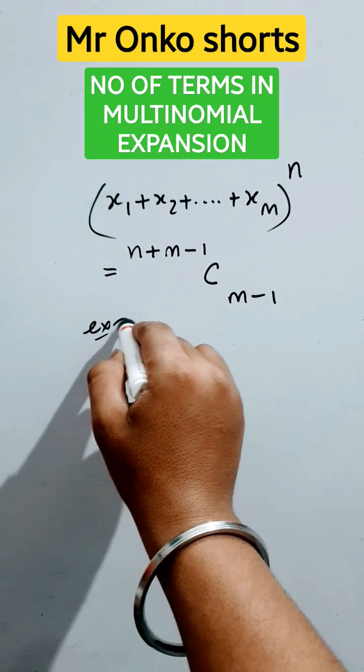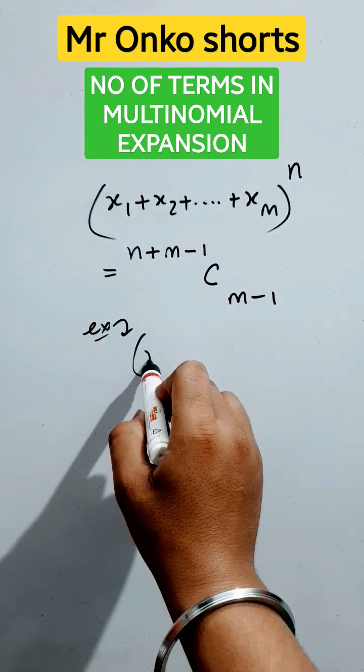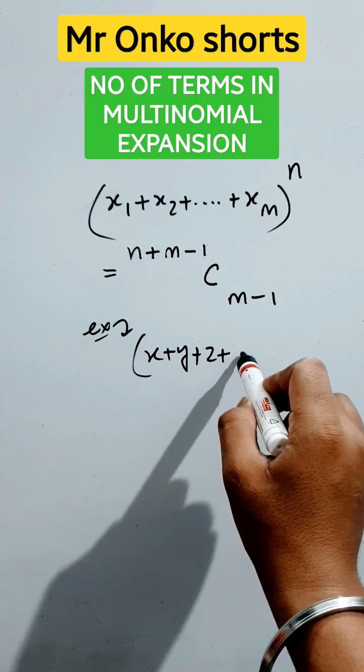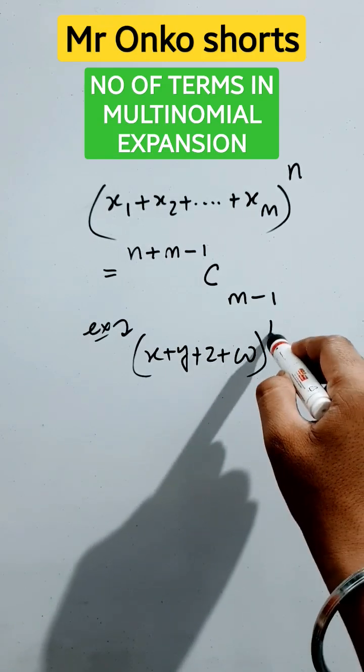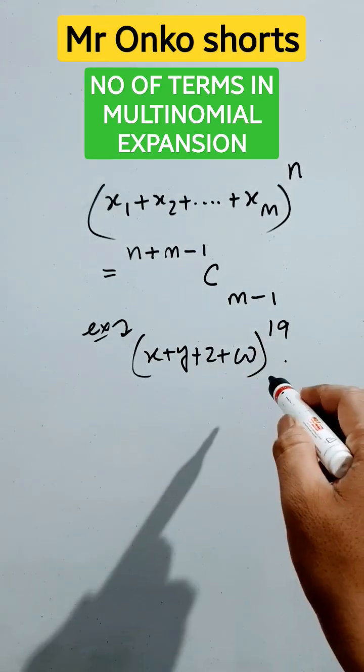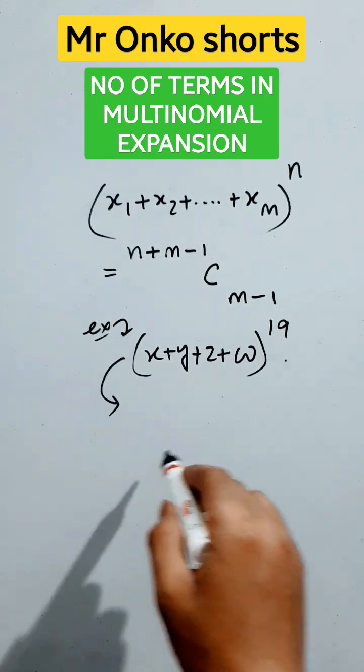Now take an example that is x plus y plus z plus w raised to the power 19. This is a given expansion. Now, we have to find the number of terms here.